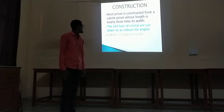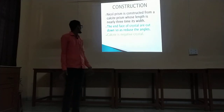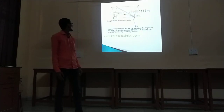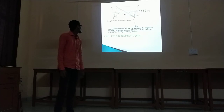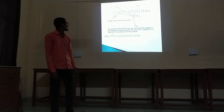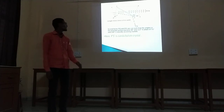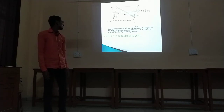The end faces of the crystal are cut down so as to reduce the angle. Calcite is a negative crystal. This shows Nicol Prism — its length is 3 times its width. Its end faces PQ and RS are cut such that the angle in the principal section becomes 68 degrees and 112 degrees, in place of 71 degrees and 109 degrees. Here P and S is Canada Balsam.